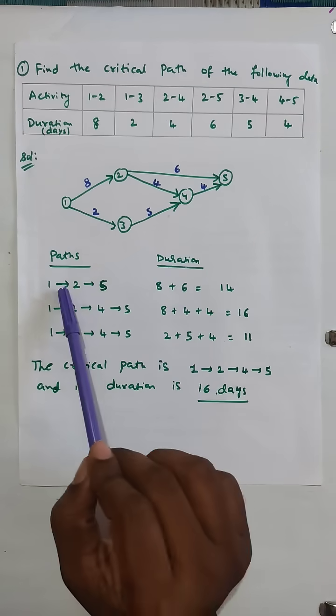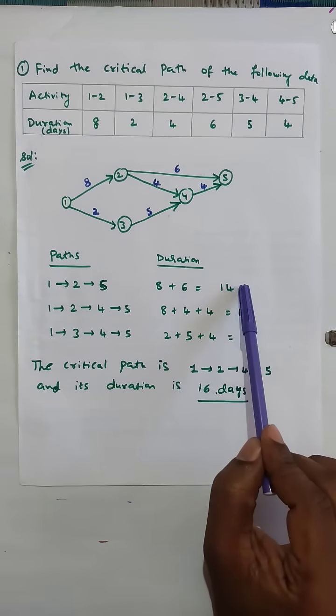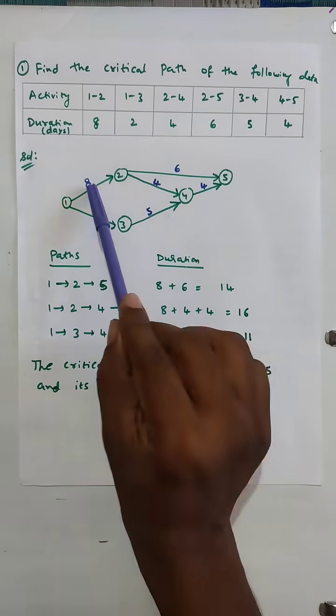First path 1-2-5: 8 plus 6, that is 14 days duration. The second path 1-2-4-5: 8 plus 4 plus 4...